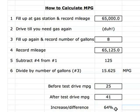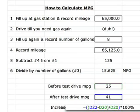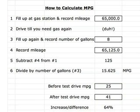Some people have been asking what is the formula, and there it is down here. You have parentheses: after test drive mileage minus before test drive mileage, in parentheses, divided by the before test drive mileage, another parentheses, times 100%. And that's the formula. This is how you can calculate your miles per gallon and the increase or difference of your before and after test drive.